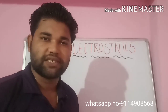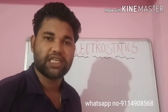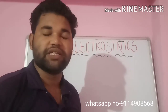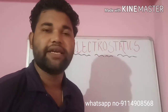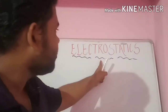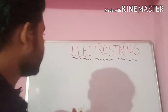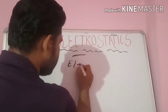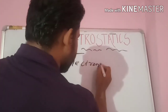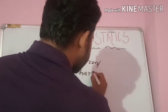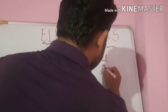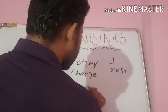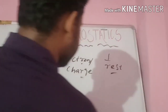Welcome to my YouTube classes. Today we discuss about electrostatics, the first chapter of physics electricity. What is the meaning of electrostatic? Electro means electron or charge. Static means at rest. That means electron or charge at rest.